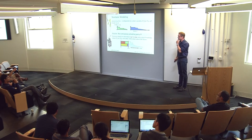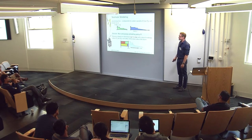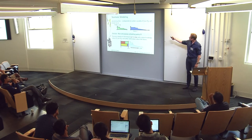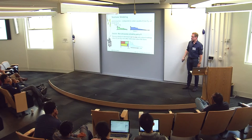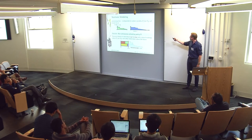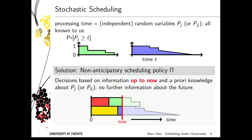The processing times can be completely different across machines. We use p_j to denote the random variable for a job when it does not depend on the machine, or p_{ij} when it depends on the machine, which can be arbitrary, as in the unrelated machine scheduling model.